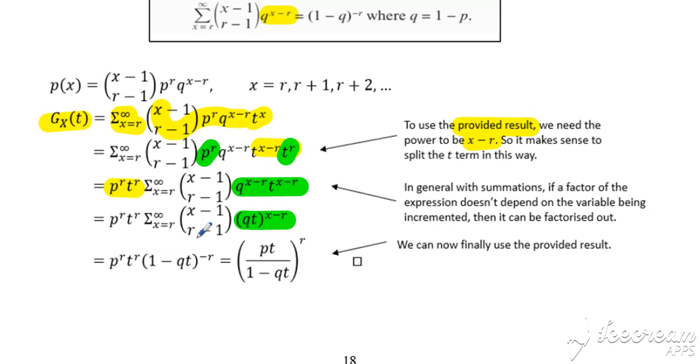And now our expression here is in a format that matches up our standard result from above. So we can quote that standard result. Our q here is qt instead of q, so we can quote the standard result.